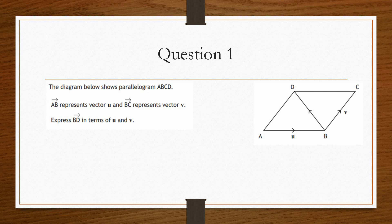So let's take a look at question one. Question one says we have a diagram below that shows a parallelogram of a, b, c, and d. Vector ab — so we go from a to b, with the arrow pointing in that direction — is represented by vector u. Vector bc — from b to c — is represented by vector v. And what we need to do is express bd in terms of u and v.